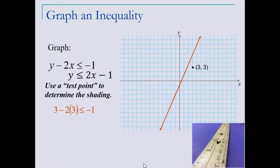So in place of x, we put a 3, and in place of y, we put 3, simplifying by multiplying first. Simplifying on the left, 3 minus 6 leaves a negative 3, which is less than or equal to negative 1.